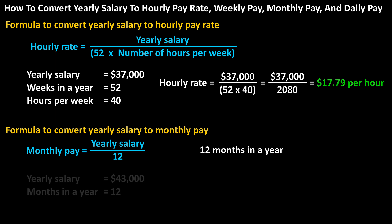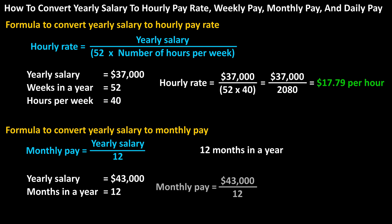For instance, if someone has a yearly salary of $43,000, the formula would be: monthly pay equals $43,000 divided by 12, which equals $3,583.33 rounded off.